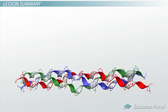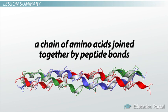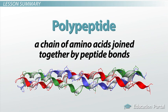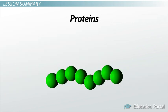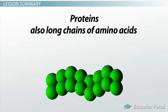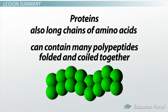More amino acids can join up in a similar fashion until you have a chain of amino acids joined together by peptide bonds, which results in a polypeptide. Proteins are also long chains of amino acids, and some larger proteins can contain many polypeptides folded and coiled together.